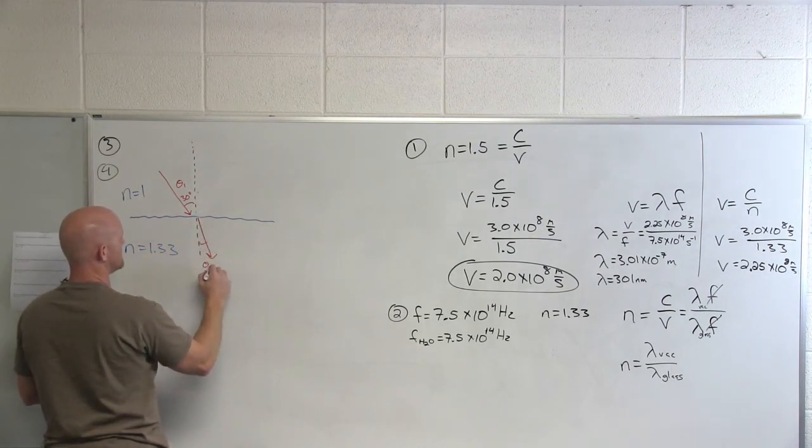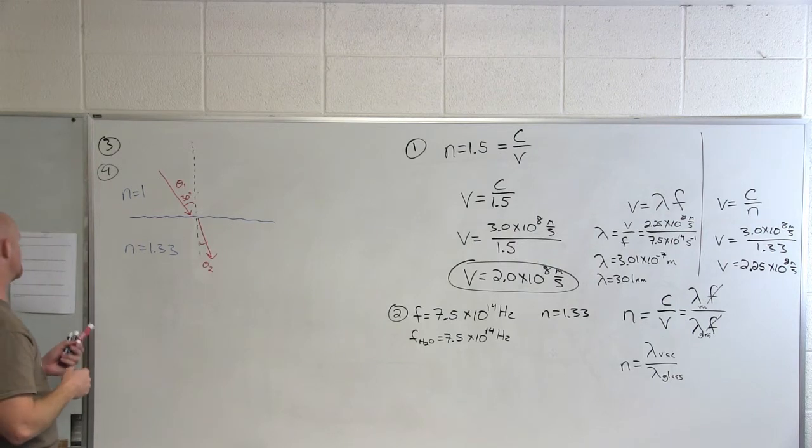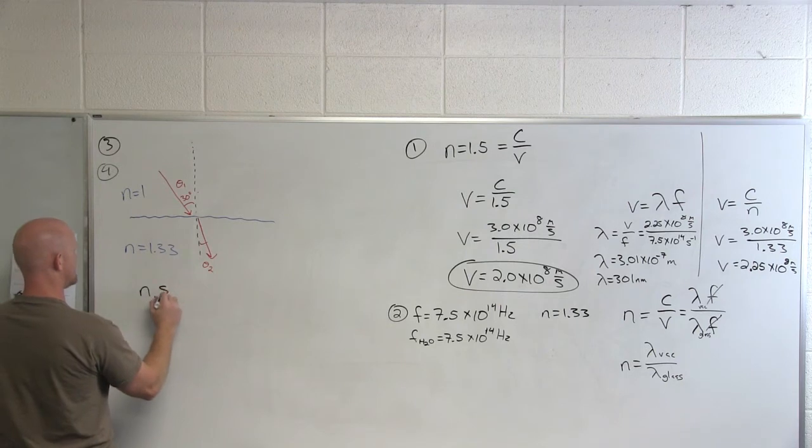That way, theta two here is smaller than theta one. So definitely smaller than 30 degrees. And how do we figure out what that angle actually is? Yeah, we'll just use Snell's law.